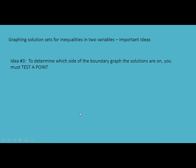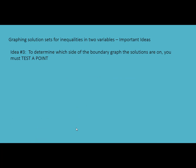The third important idea: when we determine which side of the boundary graph the solutions are on, you must test a point. You cannot do this by guessing. Less than does not always mean below — it doesn't work that way. No guessing.